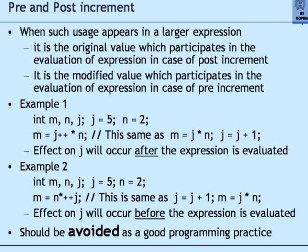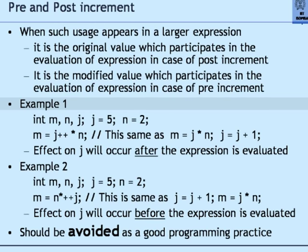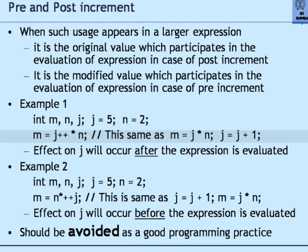However, there is a difference because these operators can also appear in a larger expression. When they appear in a larger expression, the meaning could be different. The post-increment operator means the original value of the object will participate in the expression evaluation; the expression is completed and then the incremented value takes effect. For example, if J = 5 and N = 2, and I write M = J++ * N, the ++/-- operators have higher precedence than * and / and are called unary operators.